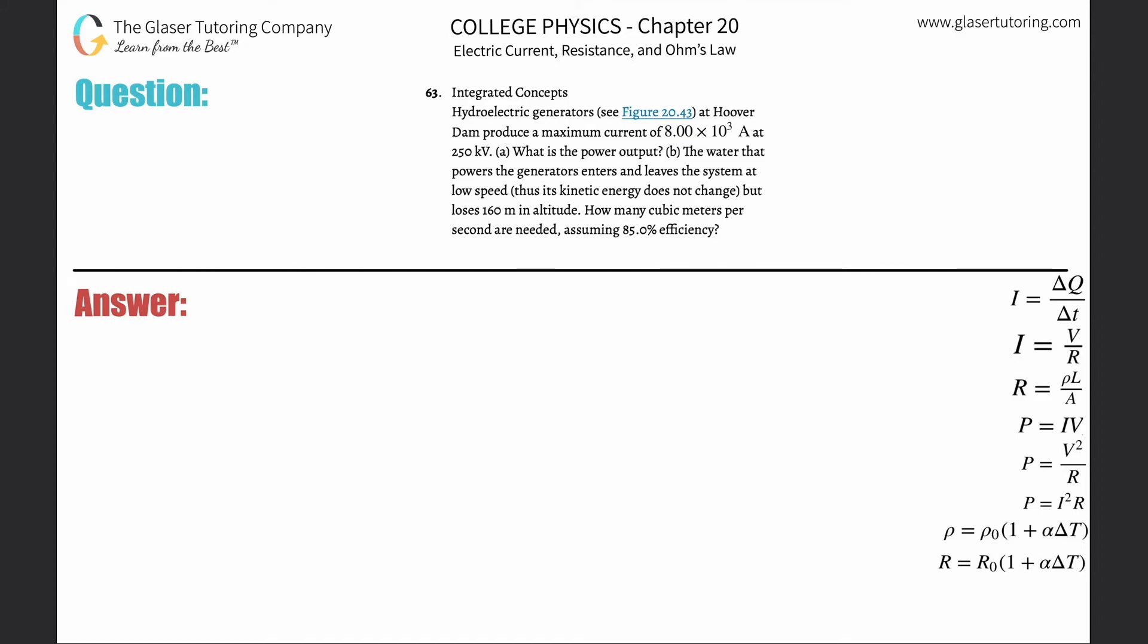Number 63, integrated concepts: hydroelectric generators at Hoover Dam produce a maximum current of 8×10³ amps at 250 kilovolts. Letter A: what is the power output? This one's very straightforward.